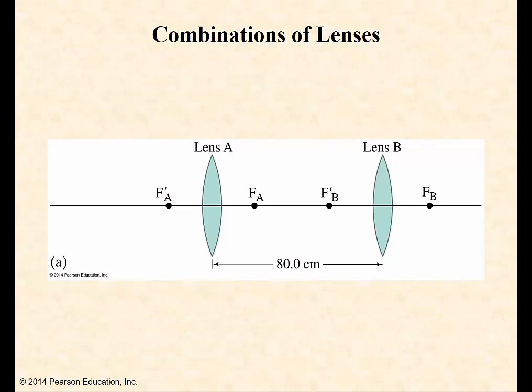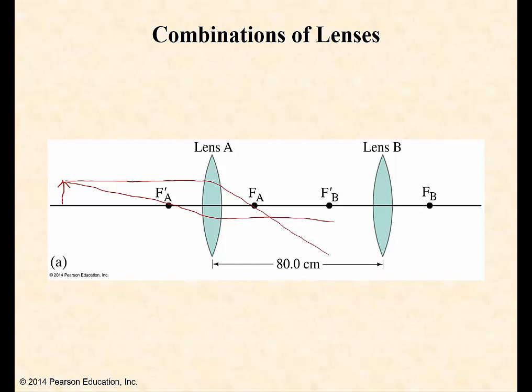In lens combinations, the image formed by the first lens becomes the object for the second lens, and the object distance may in fact become negative depending on where the original image is formed. If we have an object at point O, we trace the three primary rays as they go first through lens A and then through lens B. The first ray goes horizontally parallel to the center line in and then out through the focal point. The second line comes in through the focal point and out parallel. The third line goes through the center.